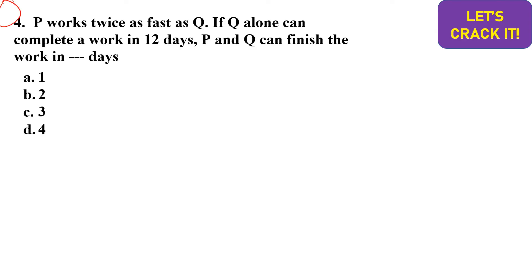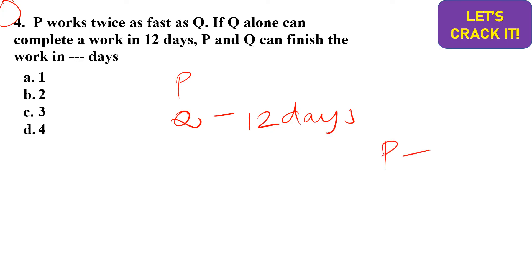The fourth question is related to time and work. P works twice as fast as Q. Q takes 12 days to complete the work. We need to find how many days it will take if both P and Q work together. Since P is twice as efficient, the number of days taken by P equals 12 divided by 2, which is 6 days.